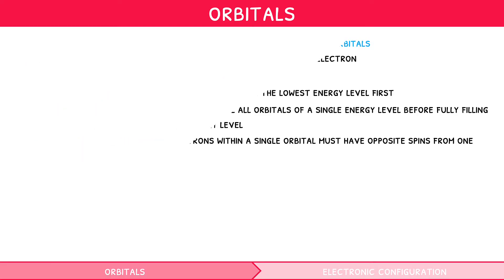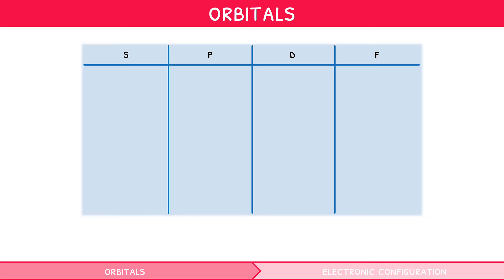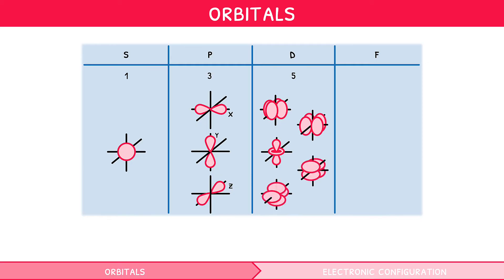Orbitals can come in several different types: S, P, D, and F. These types have different energies, numbers, and shapes. There is only one type of S orbital, which is spherical in shape. There are three types of P orbital, which are propeller in shape. There are five types of D orbitals, which you do not need to know the shapes of.